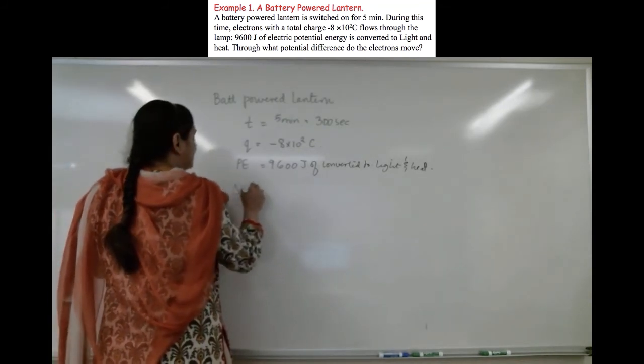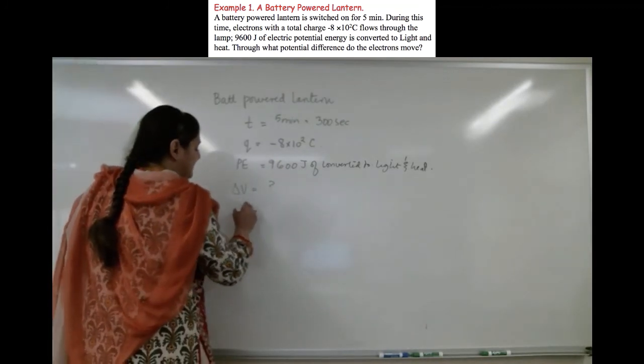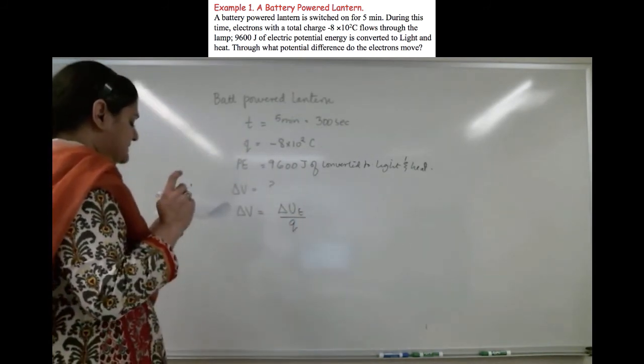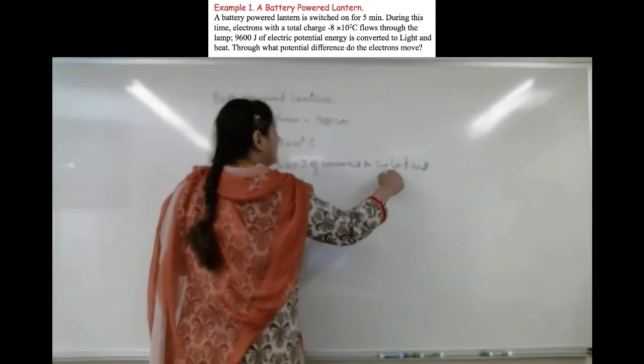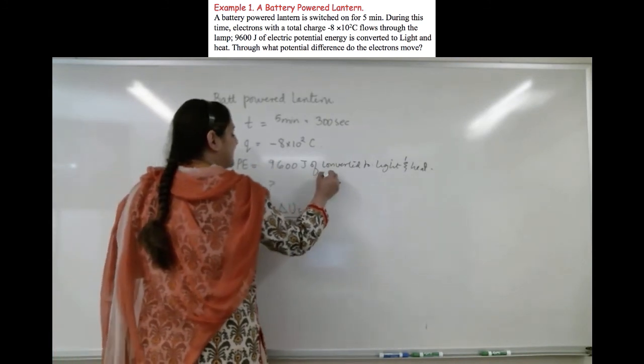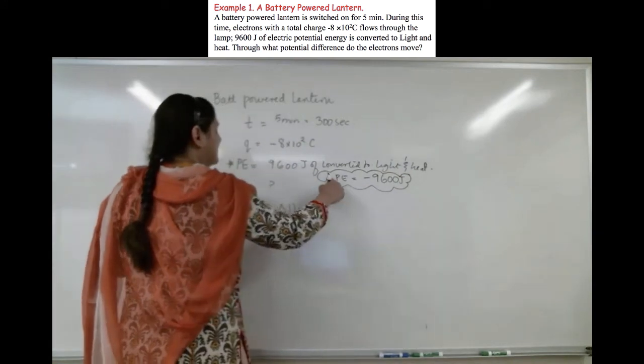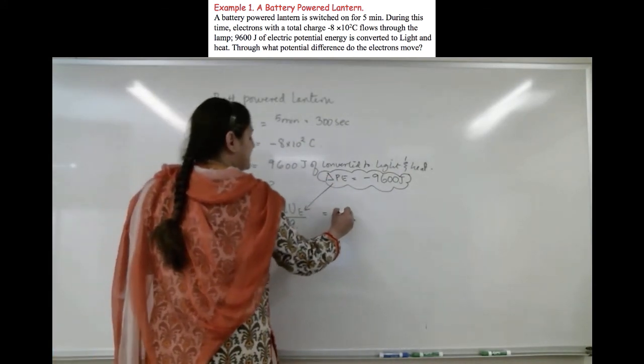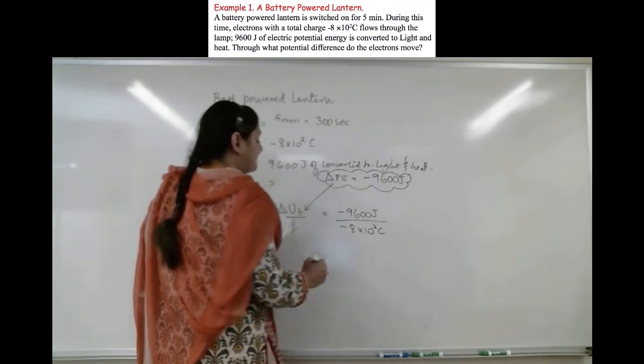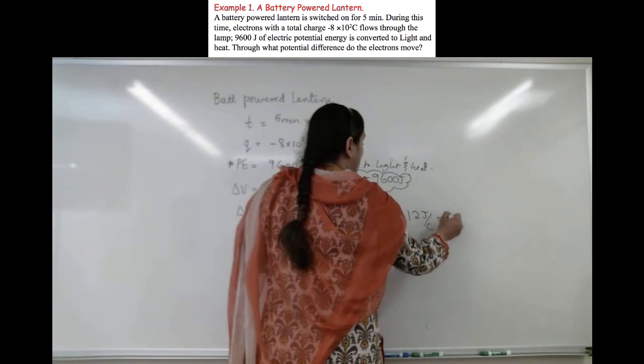Now, how do I solve this? Well, what do I know? I know delta V is delta Ue divided by Q. So that means that I need this potential energy. If this is being converted into light and heat, that means that when I talk about delta potential energy or the change in potential energy, this is losing that much energy. So my delta PE, or delta Ue potential energy has to be minus 9600 joules divided by the charge on the electron, which is minus 8 times 10 to the 2 coulombs. So if I do a little bit of math, what do I get? I get it is going to be 12 joules per coulomb or 12 volts.